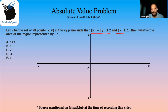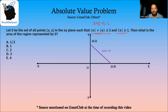If x and y are both positive, we can directly open this as x + y ≤ 2. We draw x + y = 2, and since we have x + y ≤ 2, it will be around this side of the line.